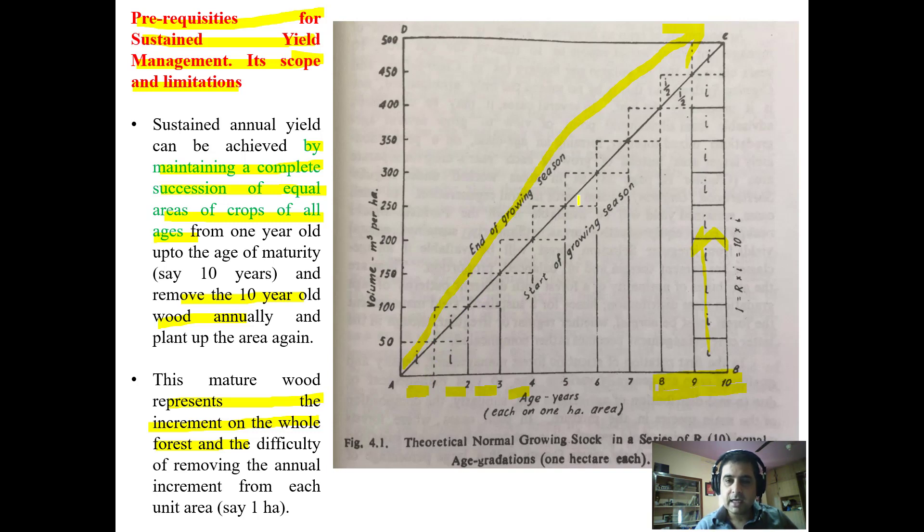So once we add them, one, two, three, four, these dotted squares, one through ten, this ultimately is taken as harvest from the 10th coupe because that is mature. We can't take individual harvest from individual coupes wherein the crop is not mature.